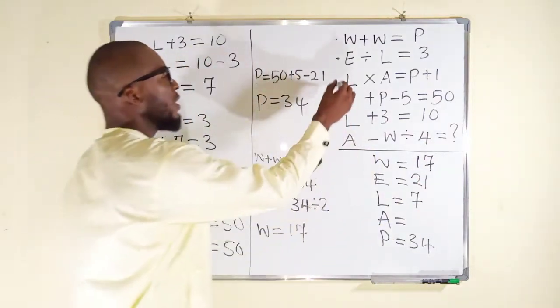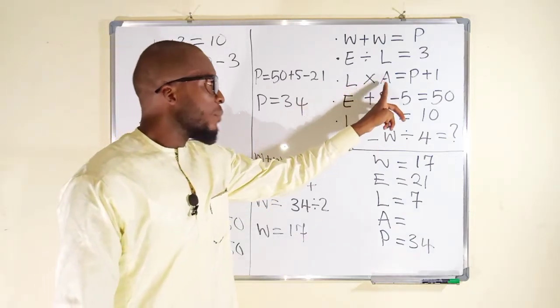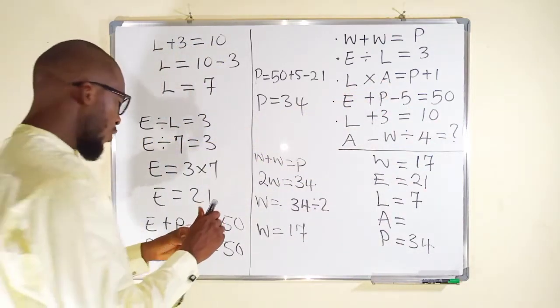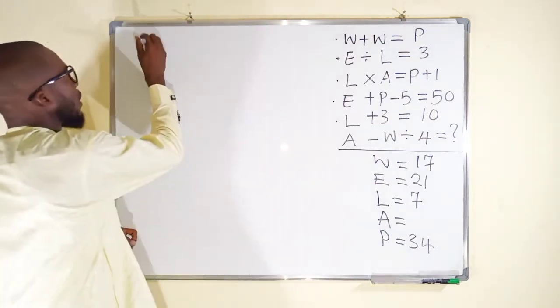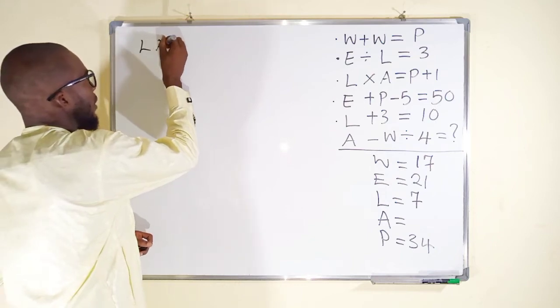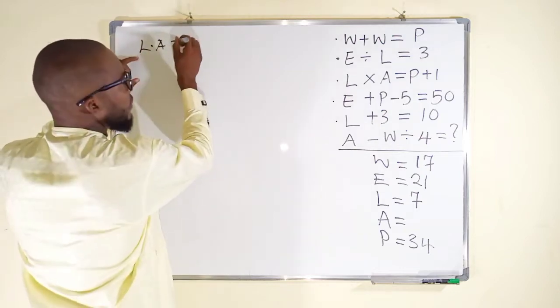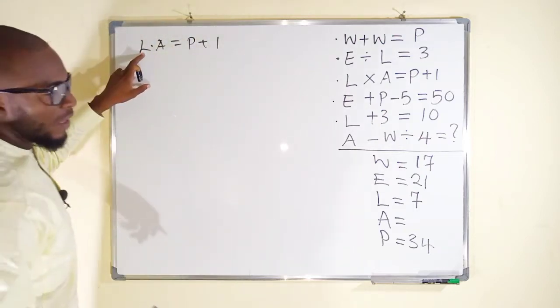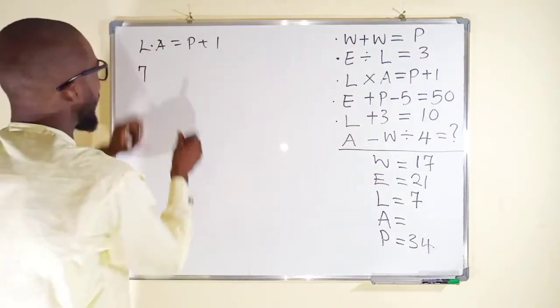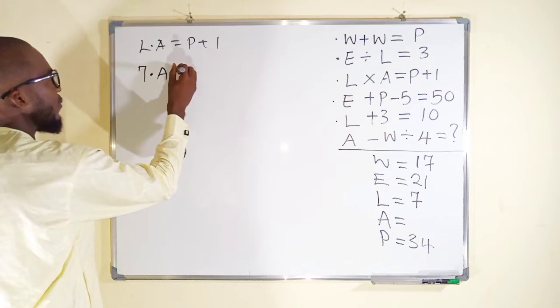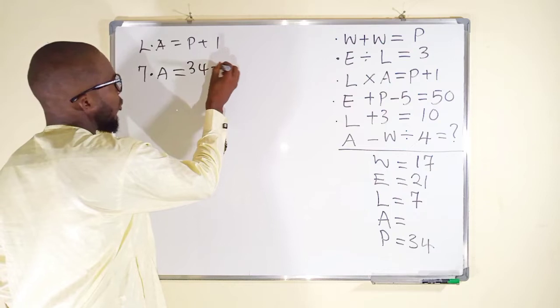This is the only equation we have not used. This is the only equation we have not used. L multiplied by A is equal to P plus 1. Let me wipe this side. L multiplied by A, which is the same thing as L times A, I can put my dot product there, is equal to P plus 1. Is L known? Yes, it's 7. L multiplied by A, still we don't know A. We are looking for A. P is 34.